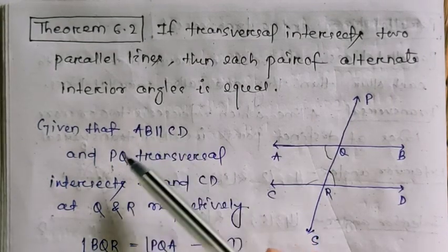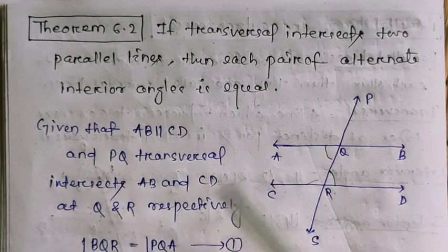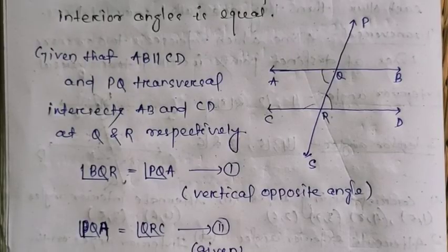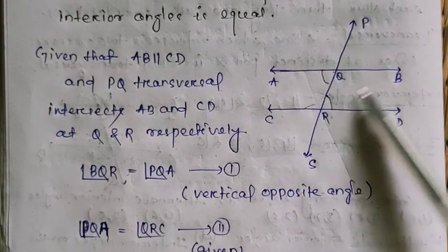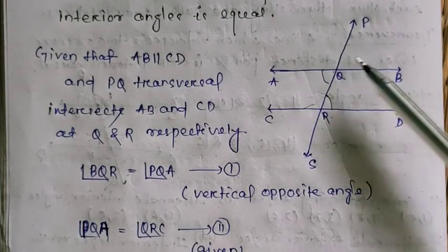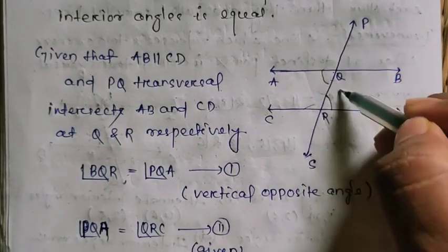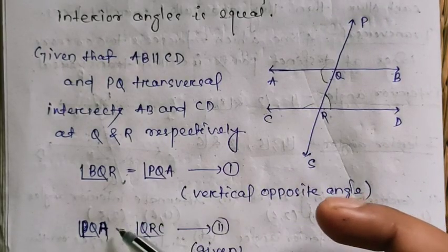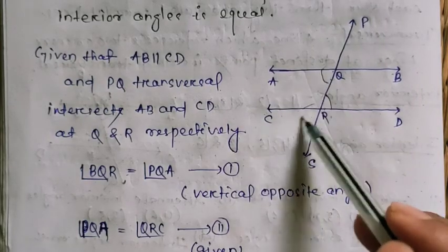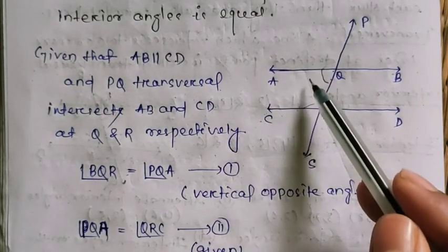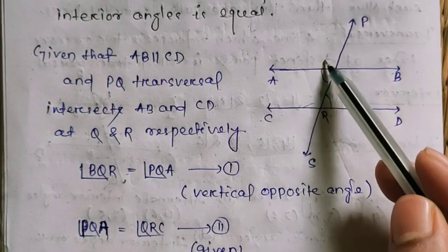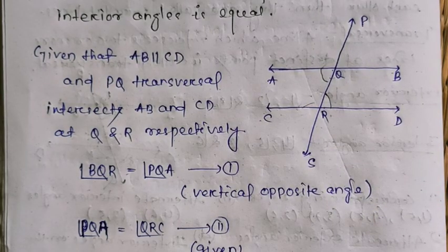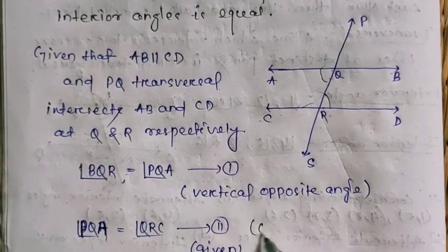Proof of Theorem 6.2: Since AB is parallel to CD, angle BQR equals angle PQA because they are vertical opposite angles. Also, angle PQA equals angle QRC because AB is parallel to CD — these are corresponding angles. From these two equations, angle BQR equals angle QRC, and these two are alternate interior angles. Hence proved.